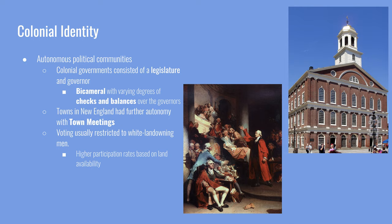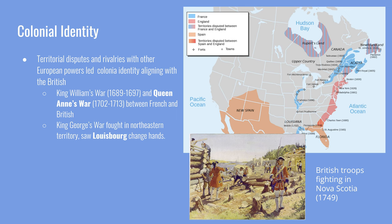Anglicization means that the colonies were becoming more British. One of the things that led to this were wars against the French and other European powers that colonists also experienced in North America. Territorial disputes that reached North America include King William's War, Queen Anne's War, and King George's War, which were fought over the northeastern territory that borders Canada, now known as Newfoundland and Acadia.